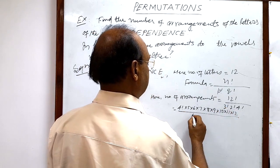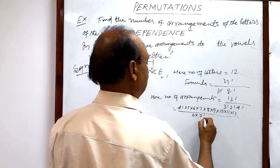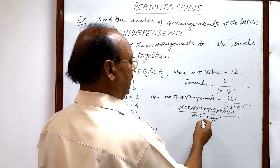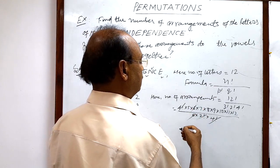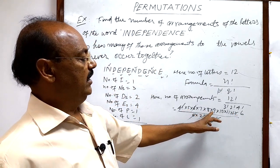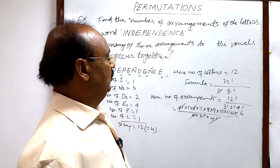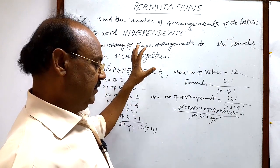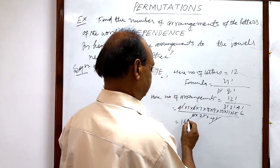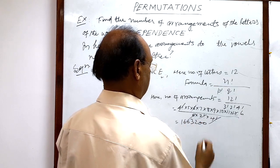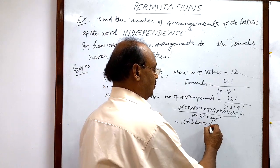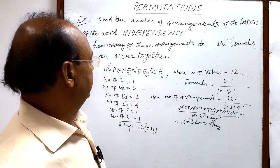Dividing by three factorial — which is six — two factorial — which is two — and four factorial, which cancels with the four factorial in the numerator. Six also cancels out, and two factorial (two) cancels as well. After multiplication of the remaining numbers — five, seven, eight, nine, ten, eleven, and six — we get the total number of arrangements.